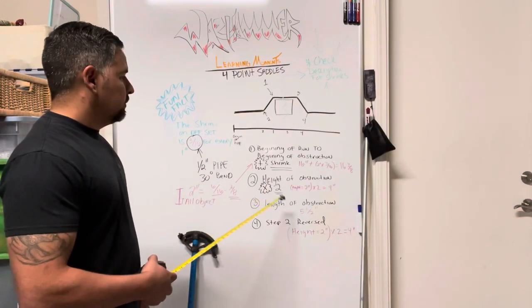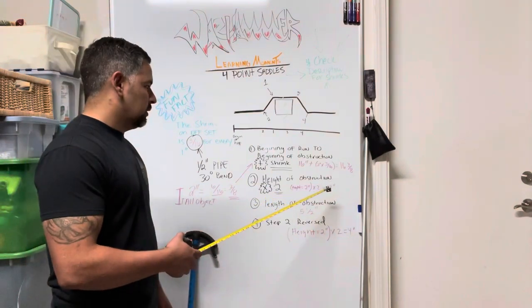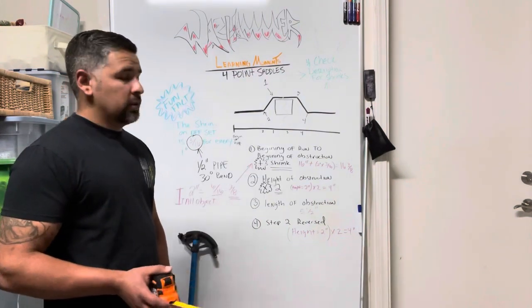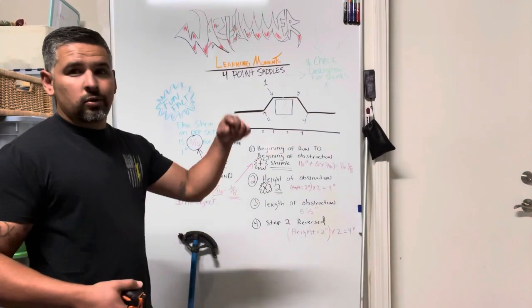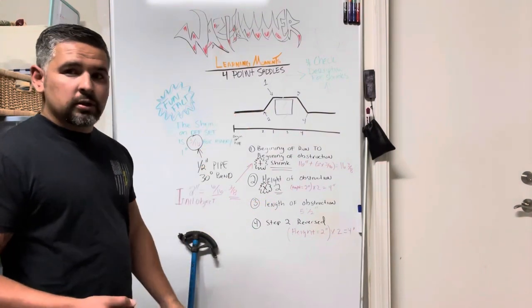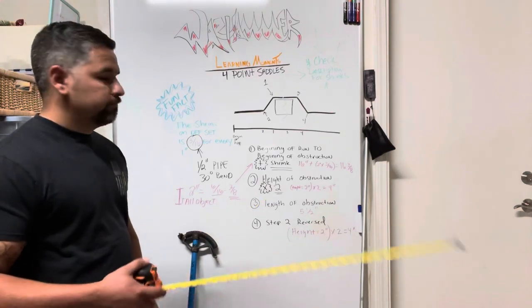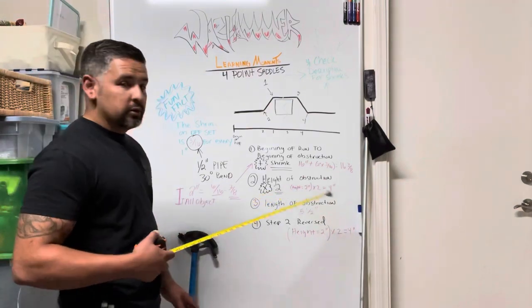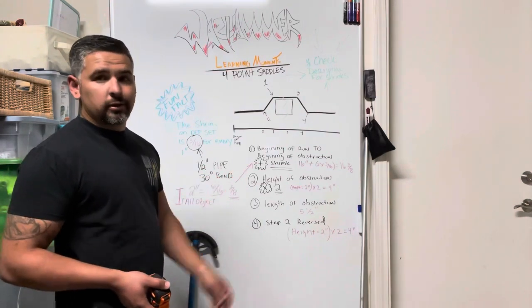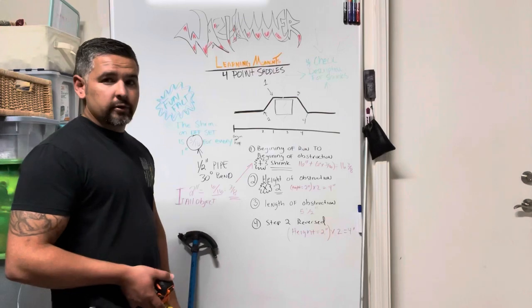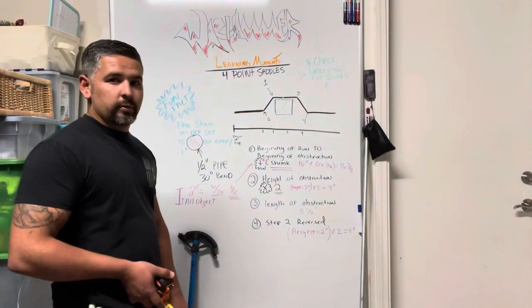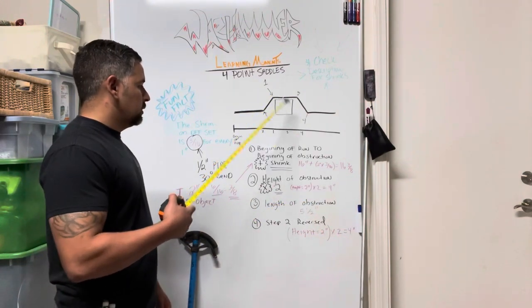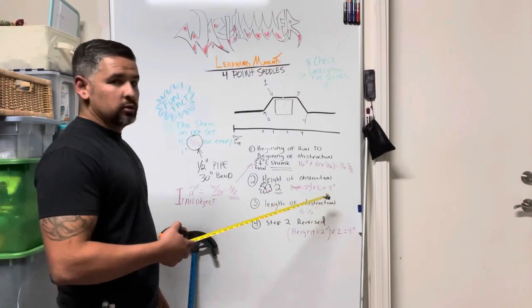Your second mark is going to be the height of the obstruction times 2, and I'm doing 2 because we're doing 30 degree bends. That particular one will change. You can check out the description below for different types of shrinkage or heights. In this case we times it by 2 because 30 degrees is like the best offset ever because you just simply remember times it by 2, good to go. So the height of our obstruction is going to be 2 inches times that by 2, it's going to be 4 inches.